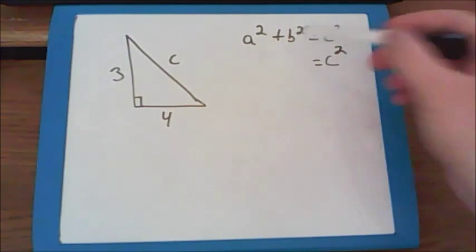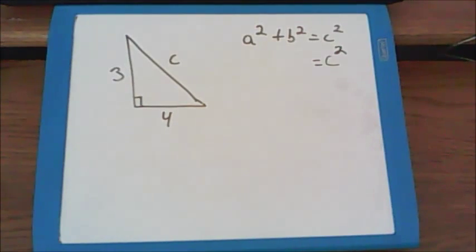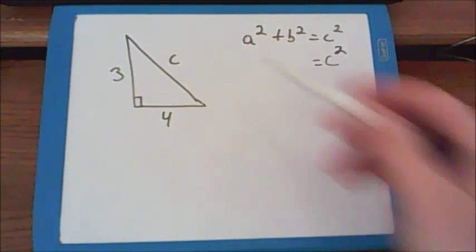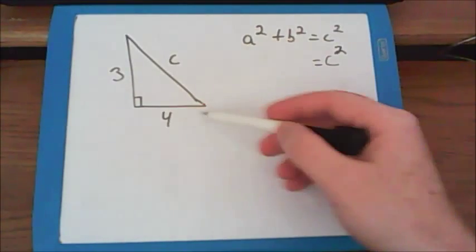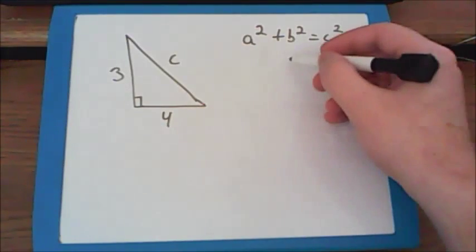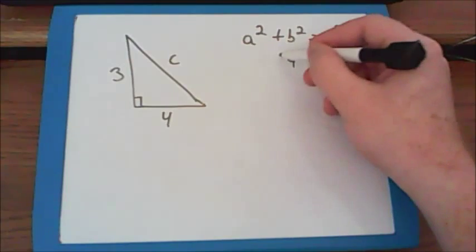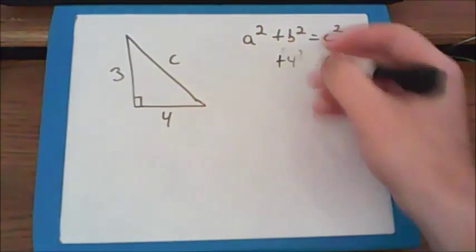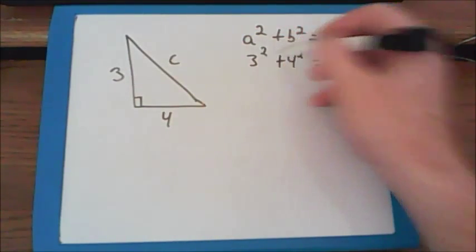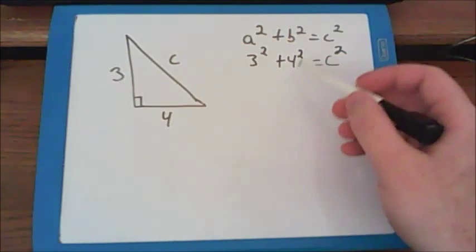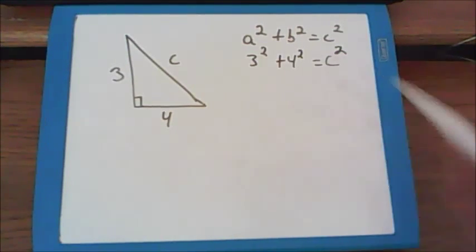We do know what a and b are, so we can substitute their values in for the formula. Remember that I put the bottom as b, so four goes in for the b. a is the other side, three in this question. So now we have three squared plus four squared equals c squared.